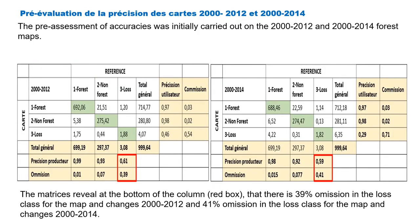The pre-assessment of accuracy was initially carried out on the two forest maps used in these studies. For the first map, covering the period between 2000 and 2012, we noticed 39% omission. For the second map, covering the period between 2000 and 2014, we noted an omission of 41% for the loss stratum.